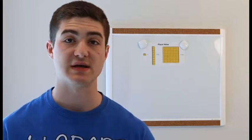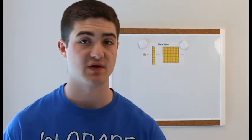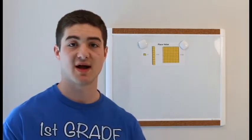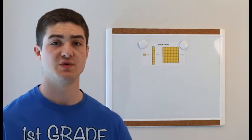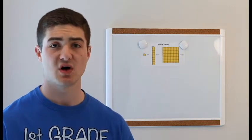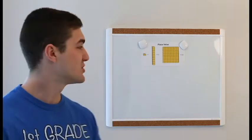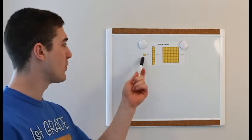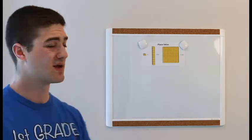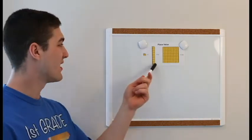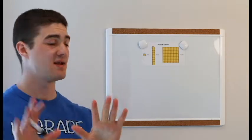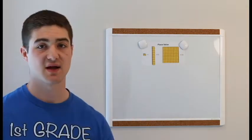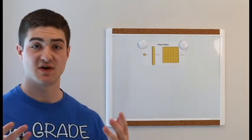The next part of our math talk is our place value. On my board I have our base-10 blocks, which is what we're going to use to solve our place value problems. We have our one cubes, which is just the one block. We have our 10 sticks, which show 10. And our last one is our 100 block, which stands for having 100.